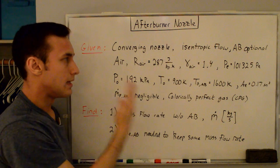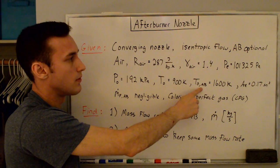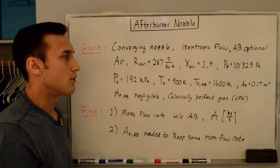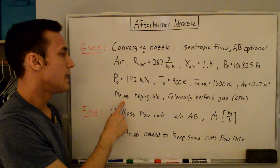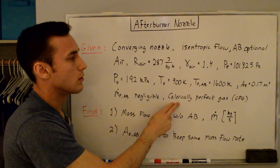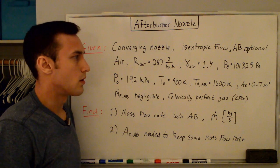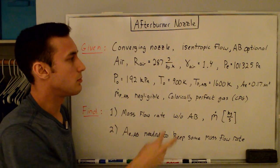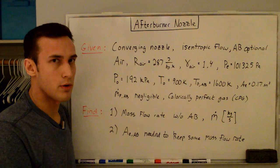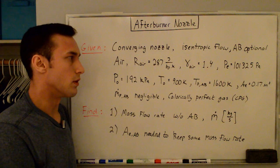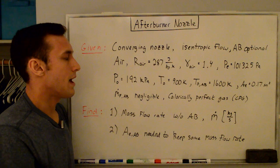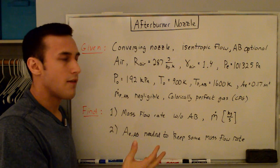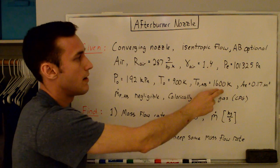The stagnation temperature at the nozzle inlet is 900 K with no afterburner, and 1,600 K with the afterburner on. The nozzle exit area is 0.17 m² without the afterburner. The mass flow rate of fuel into the afterburner is assumed negligible, and we're treating this as a calorically perfect gas (CPG). The only two differences between the non-afterburning and afterburning cases are the changing exit area — which we're solving for — and the change in stagnation temperature.